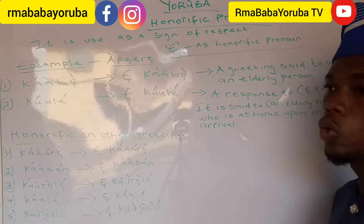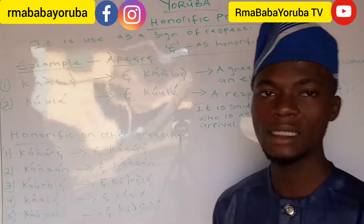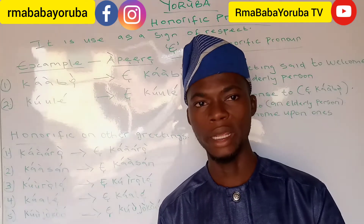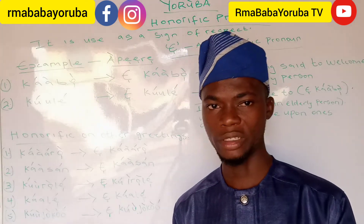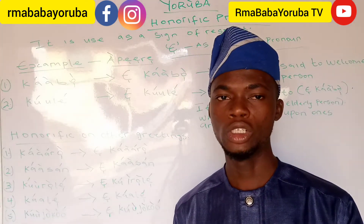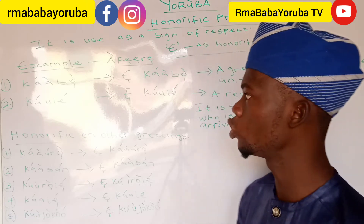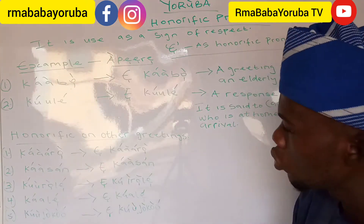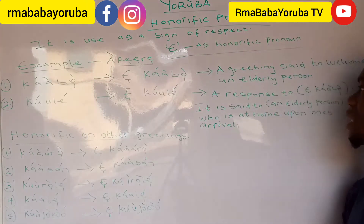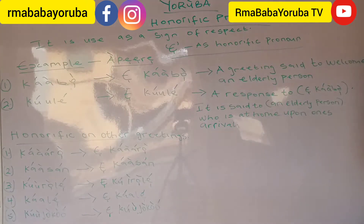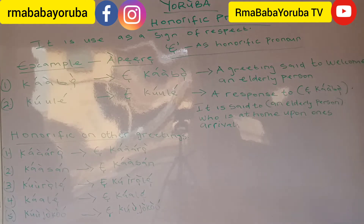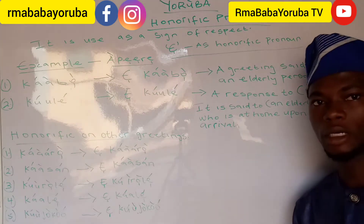The second example: 'kuule' is said to a mate or to a younger person. But when we are saying it to an elderly person, it is going to be 'e kuule,' and that is a response to 'e kaabo.' It is said to an elderly person who is at home upon one's arrival.